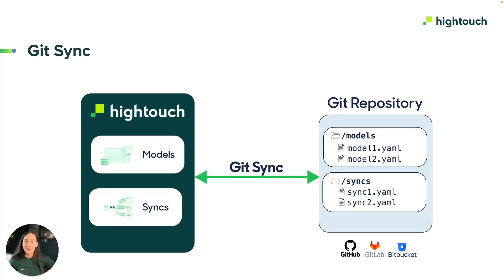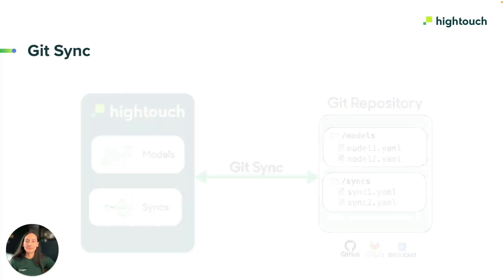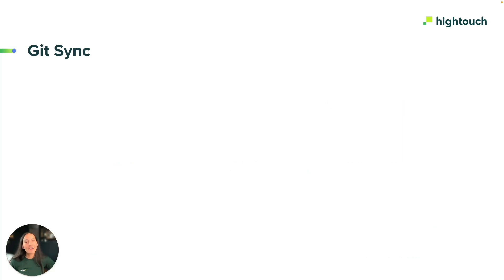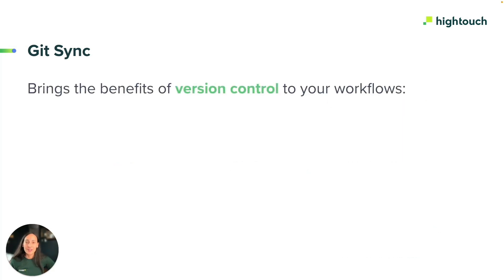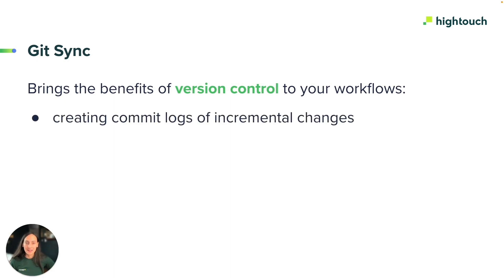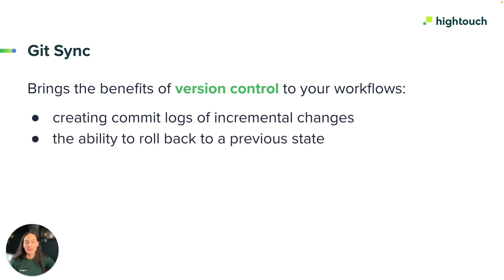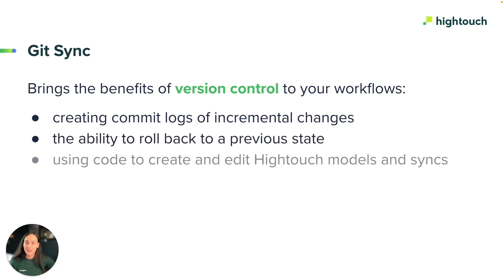Going the other way, if you update the YAML files, the configurations are updated in your Hitech instance without you having to open the app. In a nutshell, GitSync allows you to version control your data activation workflow. It provides commit logs of incremental changes, the ability to roll back to a previous state, and the ability to use code to create and edit Hitech syncs and models.